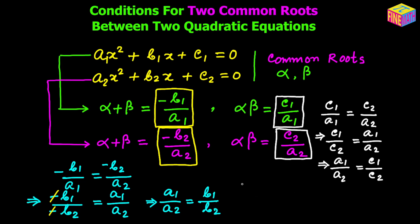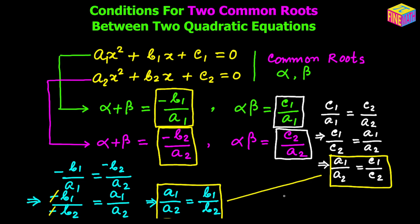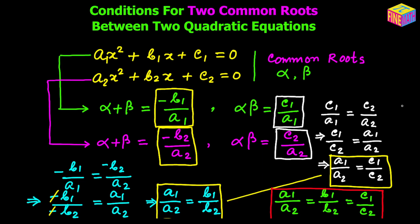Combining these two equations, we can say: a₁/a₂ = b₁/b₂ = c₁/c₂. This is the necessary condition for two quadratic equations to have both roots common. So if the two quadratic equations have α and β as roots, this condition must hold.